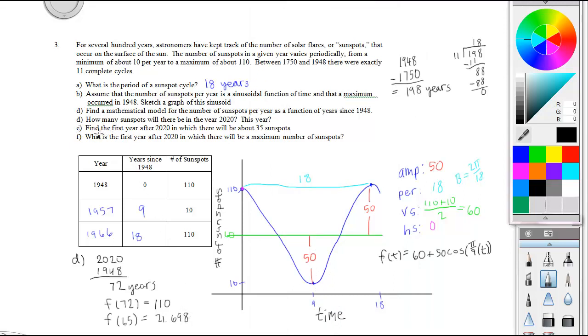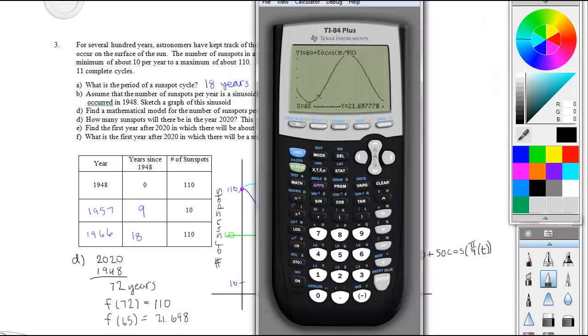Part E says find the first year after 2020 in which there will be about 35 sunspots. So after year 2020, that's 72, for which there will be about 35 sunspots. We need 35 sunspots, so we're going to come in here and adjust the window to 70 to maybe 90.